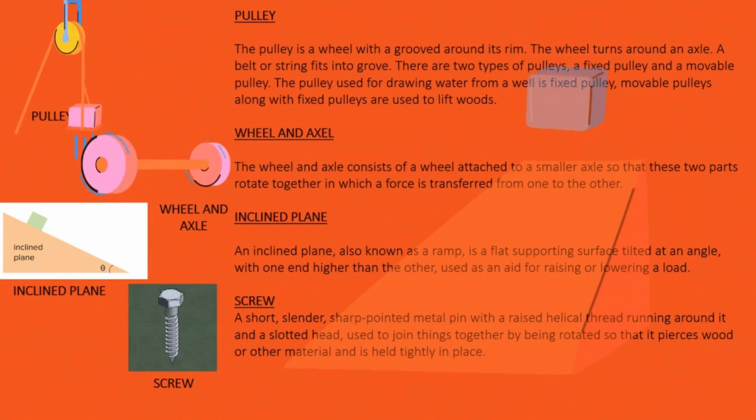Pulley: The pulley is a wheel with a groove around its rim. The wheel turns around an axle. A belt or string fits into the groove. There are two types of pulleys: a fixed pulley and a movable pulley. The pulley used for drawing water from a well is a fixed pulley. Movable pulleys along with fixed pulleys are used to lift loads.